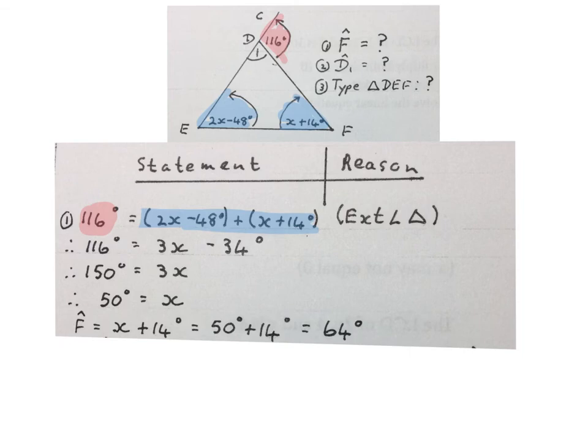So now we can work out what the value of F is. F is X plus 14 degrees they wrote in there. We worked out X was 50 degrees, so it's 50 plus 14. The size of angle F is 64 degrees. And I like to fill it in on the sketch in case we need it in future.